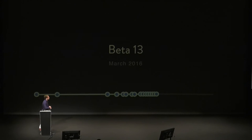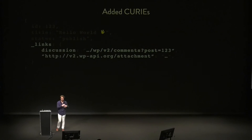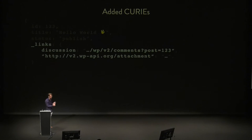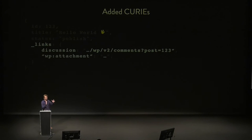In March, beta 13 — the beta numbers are getting up there, but there's no limit. The main thing we add here is curies to the responses. These fancy underscore links things: whenever you want to use a custom relation, because this is a standard, you have to use a unique URI, which is kind of annoying to read and work with in JavaScript. Curies allow you to compress that down into a custom namespace that you define somewhere else. So when you get links through the API, you should expect the custom ones to use that compressed format.